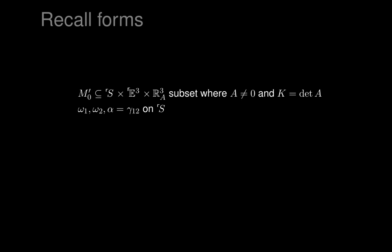On the frame bundle of the surface, we had soldering forms ω₁, ω₂, and we write the connection form γ₁₂ as α for short. On the frame bundle of Euclidean space, we had soldering forms ω₁', ω₂', ω₃', and we write α' to mean γ₁₂', again as short notation. We also had γ₂₃' and γ₃₁'. Those six differential forms form a basis for every cotangent space on the frame bundle of Euclidean space.